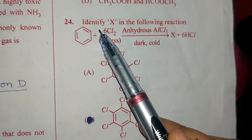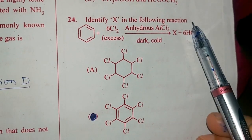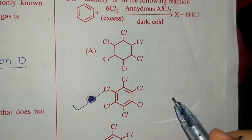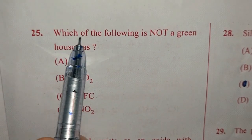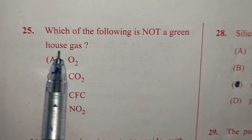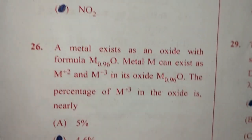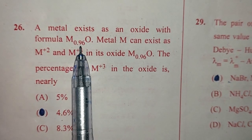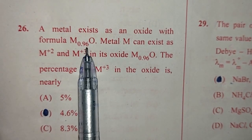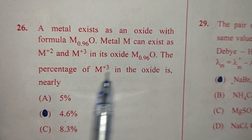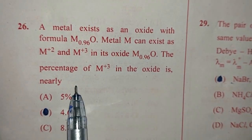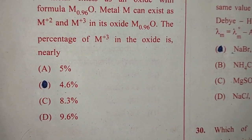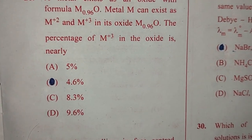Question number 24. When benzene reacts with chlorine in the presence of anhydrous aluminum chloride, it forms benzene hexachloride, that is option B. Which of the following is not a greenhouse gas? Answer is A, O2. Question 26. A metal exists as an oxide with the formula M0.96O. Metal M can exist as M+2 and M+3 in its oxide. The percentage of M+3 in the oxide is nearly 8.3%, that is option C.